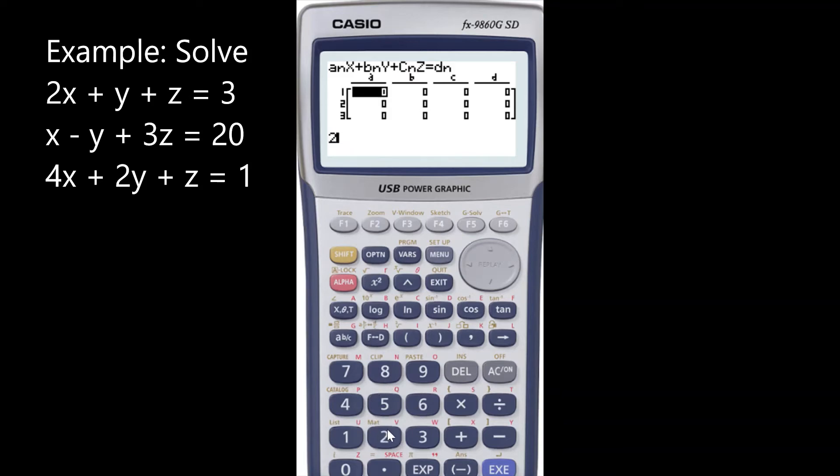So 2 enter, and then it was Y so Y is 1Y enter, and Z is 1Z so 1 enter, and then that was equal to 3. So that's the first equation. Likewise we will enter the second one: X minus Y plus 3Z is equal to 20.